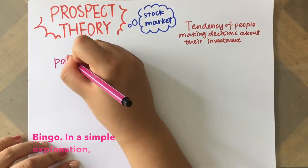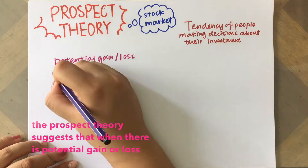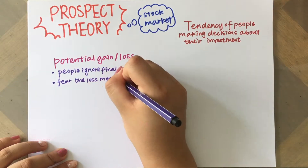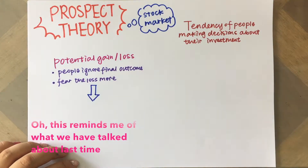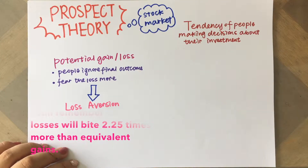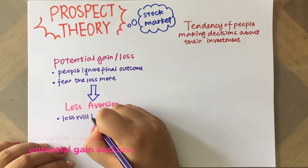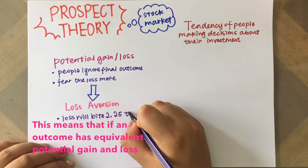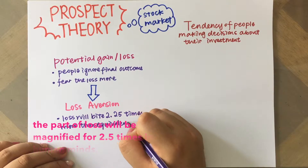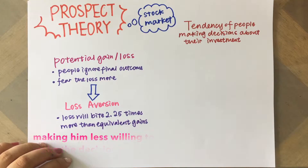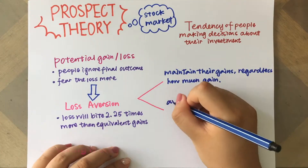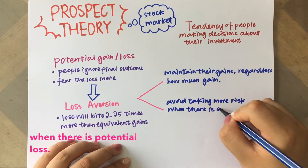Bingo! In a simple explanation, the prospect theory suggests that when there is potential gain or loss when making a decision, people tend to ignore the final outcome and fear the loss more. This reminds me of what we talked about last time — loss aversion in prospect theory. Loss is felt 2.25 times more than equivalent gains. This means that if an outcome has equivalent potential gain and loss, the part of loss will be magnified 2.5 times more in human minds, making people less willing to make the decision. Thus, they tend to maintain their gains as long as possible, and inversely, they tend to avoid taking more risk when there is potential loss.